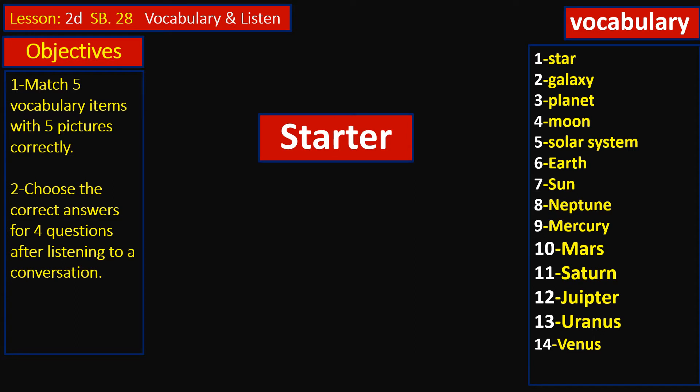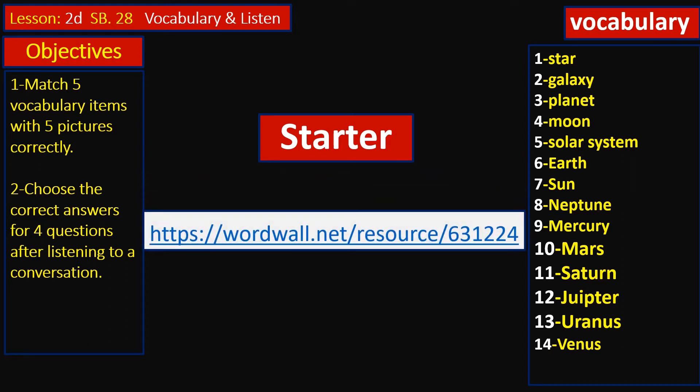Now let's have a look at our vocabulary. We have star, galaxy, planet, moon, solar system, Earth, Sun, Neptune, Mercury, Mars, Saturn, Jupiter, Uranus, and Venus. For the starter, I uploaded here a link that you can copy and search in Google, and you'll find a very nice game you can play.